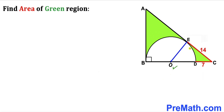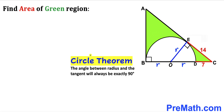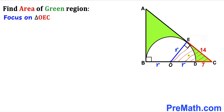Connecting center O to the point of tangency E, we observe that OE is the radius of the semicircle — call it r. Likewise, OD and OB are also radius r. By the circle theorem, angle OEC is 90 degrees. So right triangle OEC has legs r and 14, with hypotenuse OC equal to r plus 7.